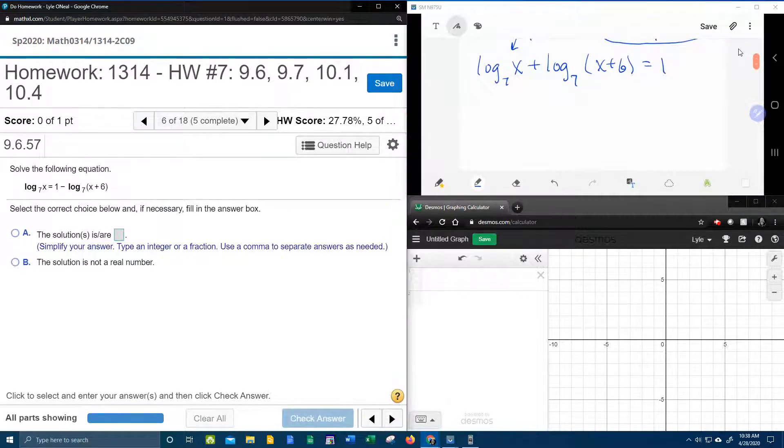Now, log base 7, log base 7, those bases match, and they are attached with addition, which means we're going to get to use the product rule. Addition turns into multiplication. So the two logs become one, and their stuff gets timesed. So it's going to be x times x plus 6 equals 1.